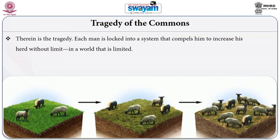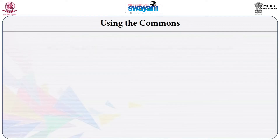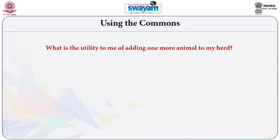In this kind of situation each herdsman is locked into a system that compels him or her to increase his or her herd without any limit, while the regeneration capacity of the pasture is quite limited. As Hardin argued: 'Ruin is the destination toward which all men rush, each pursuing his own best interest in a society that believes in the freedom of the commons' — here freedom meaning freedom of use.